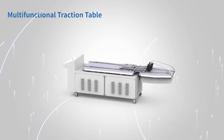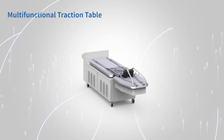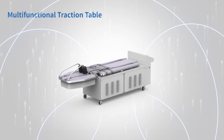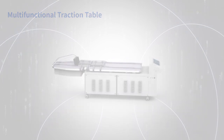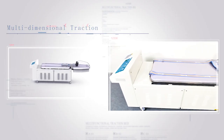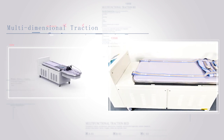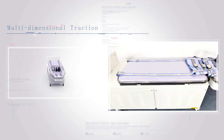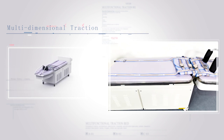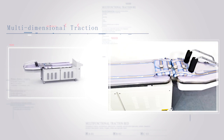The multifunctional traction table is a new type of rehabilitation physiotherapy equipment suitable for traction therapy in multiple places, and more embodies the concept of three-dimensional therapy, with two-way confrontation traction function equipped with automatic traction compensation function to achieve better traction effect.